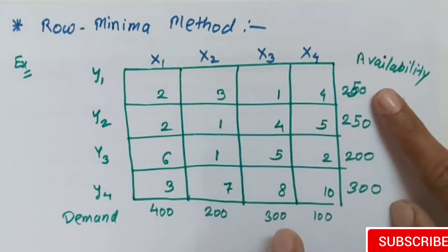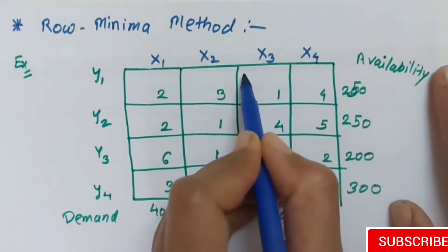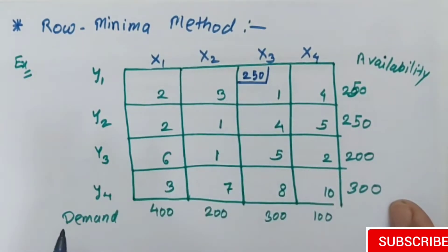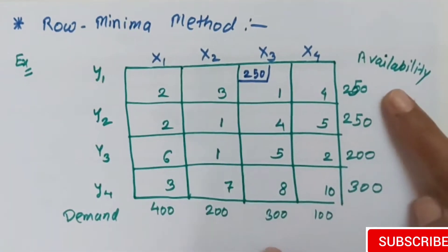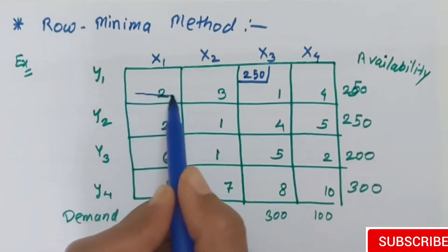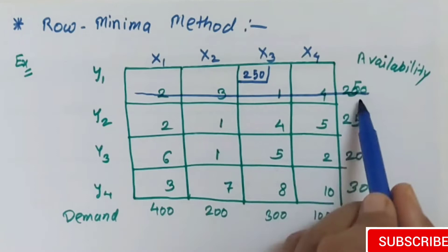If we check 250 and 300 in comparison, 250 is the minimum, so this will be assigned in the first row. Now compare to this condition: row hold. That means the row will cancel out, and this is 250.